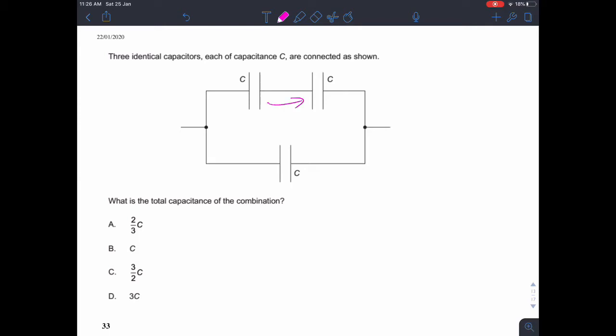So in series, we've got 1 over C plus 1 over C equals 1 over C total. And then we get, so that's 2 over C equals C total. So C total equals 1 over C total. So C total is C over 2. So the total capacitance of this top row is C over 2.